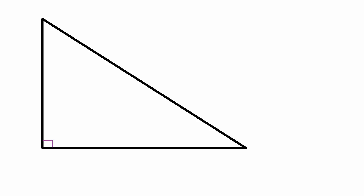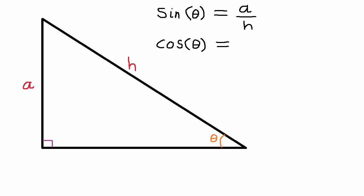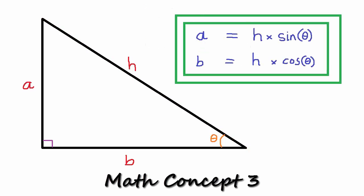The next concept is the basics of trigonometry, which we actually used last week but I'll remind you of it here again. If we have a right-angled triangle with angle theta and the longest side, the hypotenuse, is of length h, then sin(theta) is equal to the length of the side opposite the angle divided by h, and cos(theta) is equal to the side adjacent to the angle divided by h. By multiplying both sides of these equations by h, we have equations for finding the lengths of sides a and b: the opposite side equals h times sin(theta), and the adjacent side equals h times cos(theta).